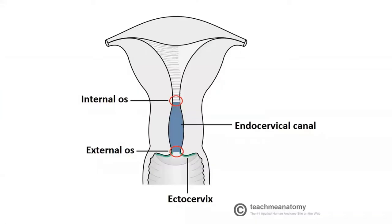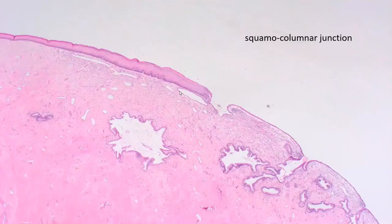Starting with the basic anatomy, the cervix is the lowermost portion of the uterus. It opens outside via the vagina and is connected to the body of the uterus via the endocervix. The exocervix is lined by stratified squamous epithelium and the endocervix is lined by endocervical glands. The transition between the two is called the squamous columnar junction.